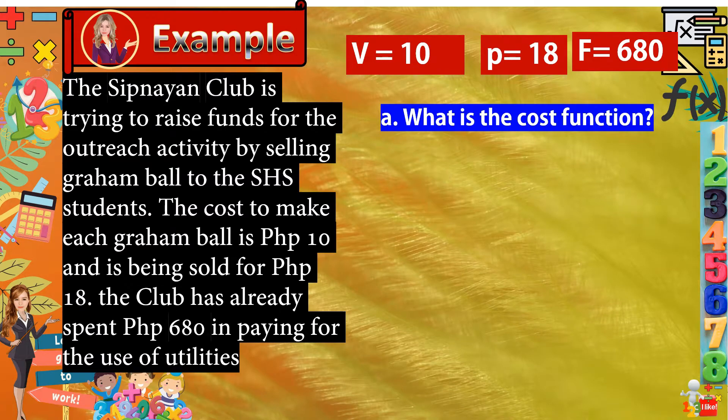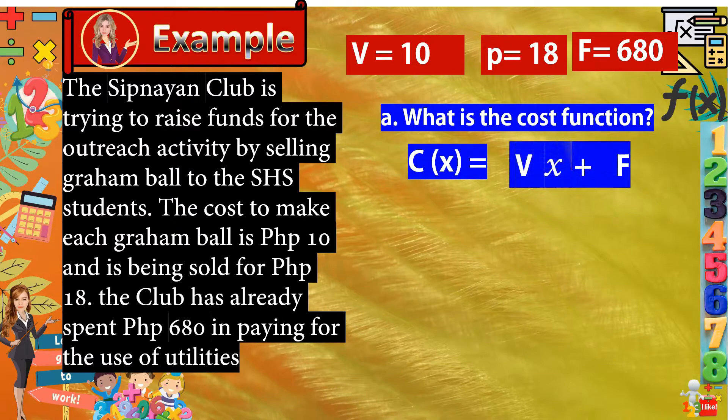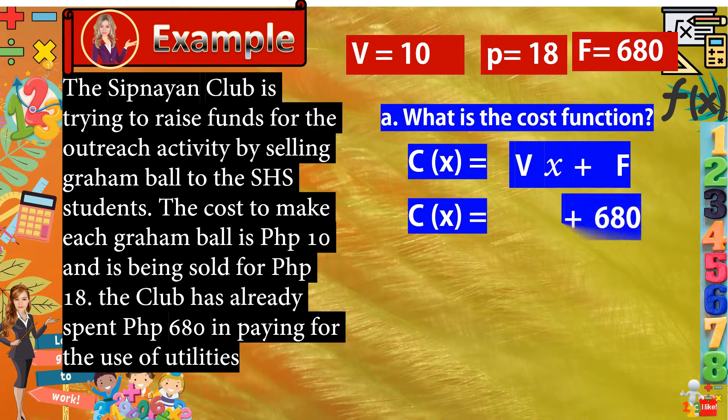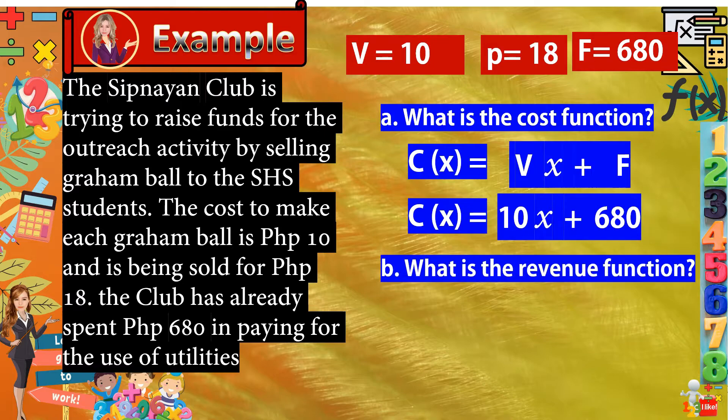With all these values, we can now answer letter A. What is the cost function? Based on our discussion a while ago, when we say cost function, it is given by C(x) is equal to vx plus f. The x here stands for the unit of a product, which is the graham ball. So, we will simply replace it. We have C(x) is equal to v, which is 10x plus f, which is 680. With this, we have cost function C(x) is equal to 10x plus 680.